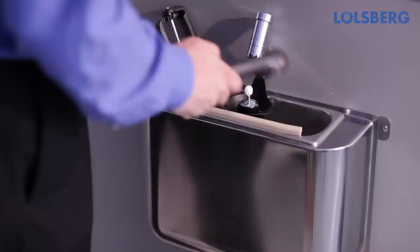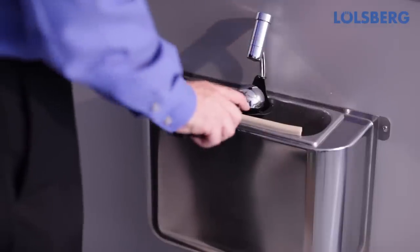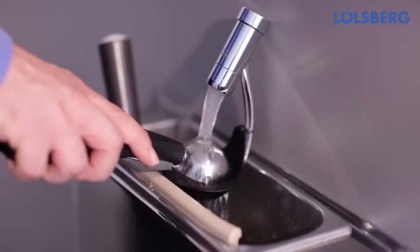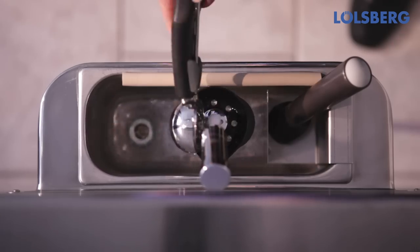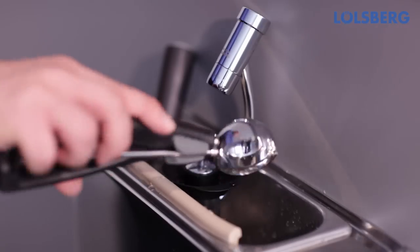The automatic shut-off valve is closed by the water pressure after rinsing. The scoop is always rinsed with fresh water from above and below. Dirty washing water runs away immediately.